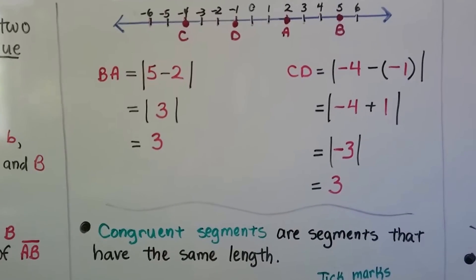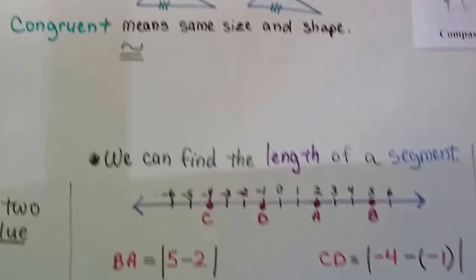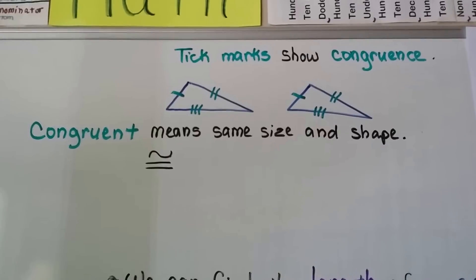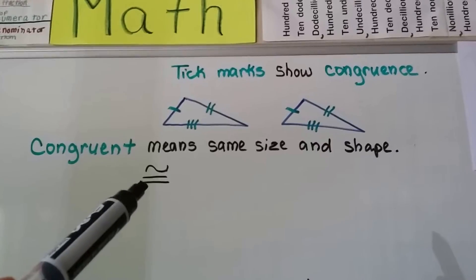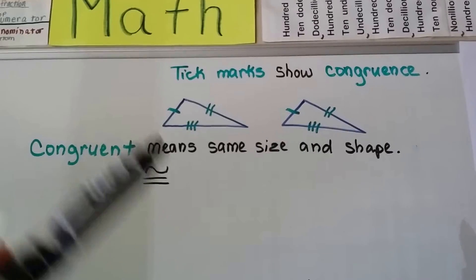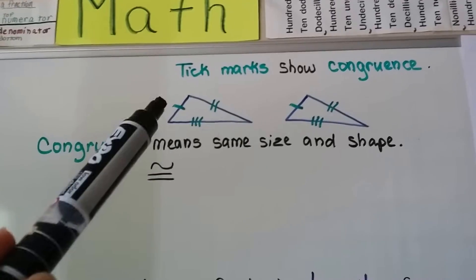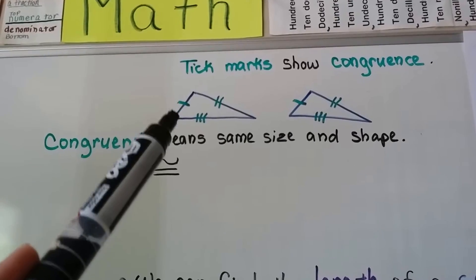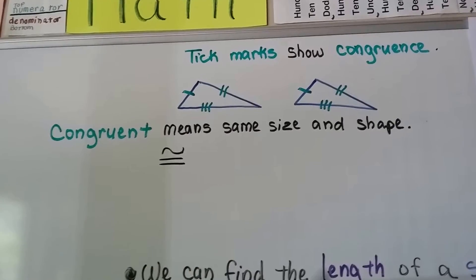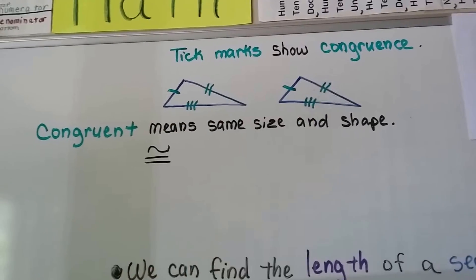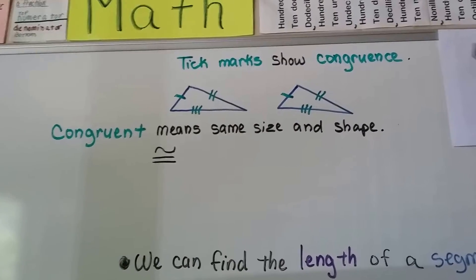And congruent segments are segments that have the same length. So tick marks show congruence. And congruent means same size and shape, and this is the symbol for congruent. So we can say with one tick mark here and one tick mark here, that these two sides correspond to each other and they are congruent. This side and this side with the two tick marks are congruent to each other, and the side with three tick marks and this side with three tick marks are congruent to each other.